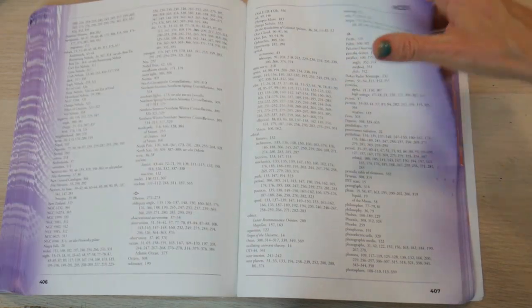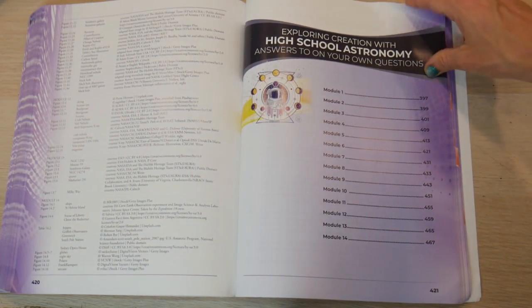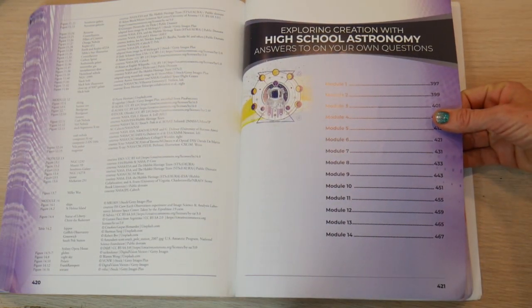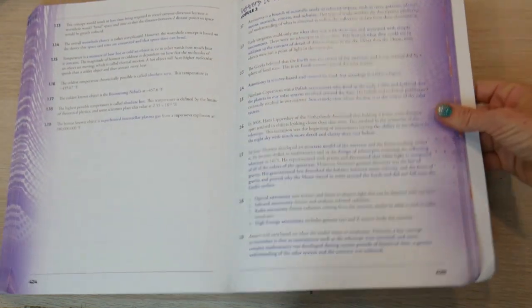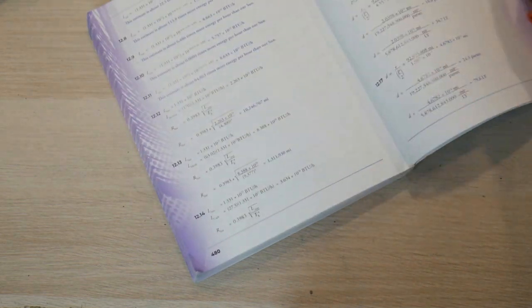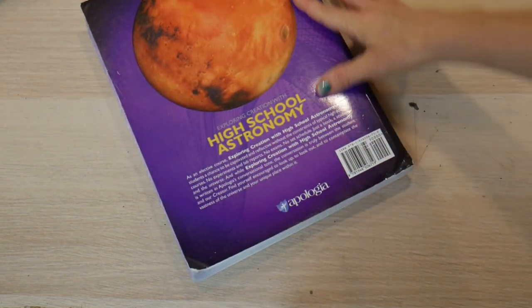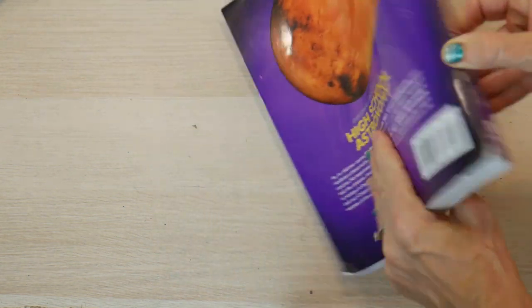Of course they have an extensive index. And these are the answers to the questions. So if your high schooler likes to cheat, you could rip them out. But they're also in the back of the book. You don't have to get a teacher manual to go through this. You just need this book. And that's one thing that's really nice about this high school astronomy book.